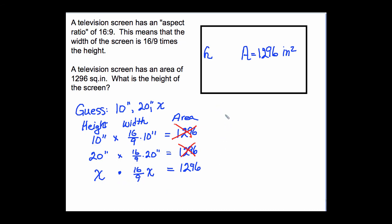Let's work it out. X times 16 ninths X is 16 ninths X squared. And that equals 1296. So we'll rewrite this equation up top. 16 ninths X squared equals 1296. We know that we can multiply by the reciprocal of 16 ninths on both sides. That's 9 sixteenths.